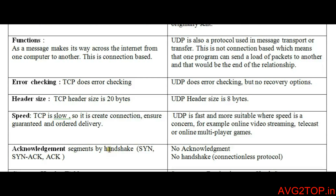Function: when a message or file is sent from one computer to another in TCP, it forms a connection or relationship between the two networks. But in UDP, when the message or file is transferred from source to destination, the packets are completely loaded and it creates an end of the relationship — the relationship completely stops once the file or message is sent.